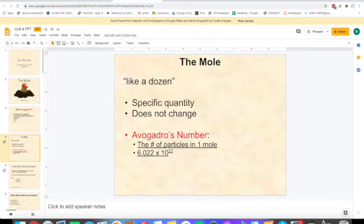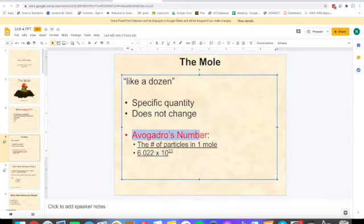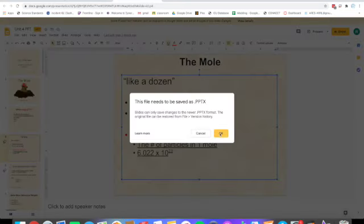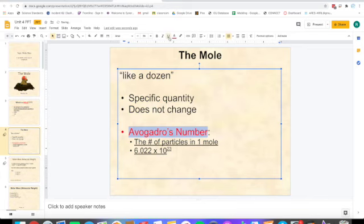The mole is a number used to explain the amount of something, kind of like how a dozen represents 12 or how a ream of paper is 500 sheets. A mole is Avogadro's number. You need to know that Avogadro's number is the number of particles in one mole. That number is 6.022 times 10 to the 23rd.